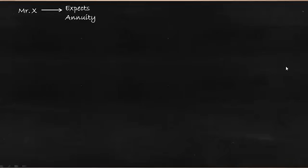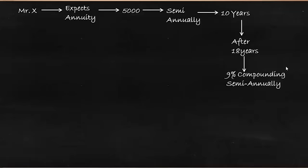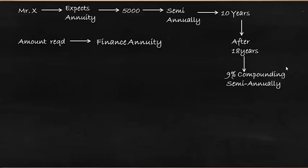Mr. X expects an annuity of 5000 semi-annually for a period of 10 years, and this is after 18 years, at a rate of 9% compounding semi-annually. So what is the amount required to finance this annuity? Mr. X is expecting 5000 semi-annually — that is 10,000 every year — for a period of 10 years, and this is his expectation after 18 years.